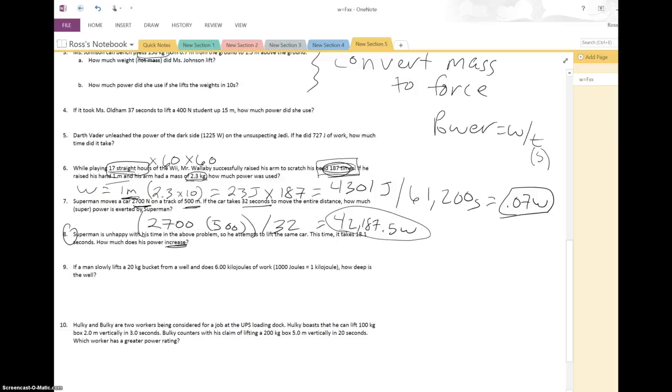So in number 9, if a man slowly lifts a 20-kilogram bucket from a well and does six kilojoules of work, so 1,000 joules is one kilojoule, how deep is that well? So the first thing that I like to do is always just label things. So work, they tell us how much work they do. Six kilojoules. So if one kilojoule is 1,000 joules, let's just convert that now. So that's 6,000 joules of work. And let's figure out what the force is. It's a 20-kilogram bucket. Multiply it by 10 for acceleration due to gravity, and we're left with 200 newtons.